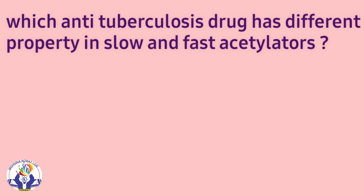Here is the first question, and it was about anti-tuberculosis drugs — which drug has a different metabolism property in slow and fast acetylators? The answer here will be isoniazid.